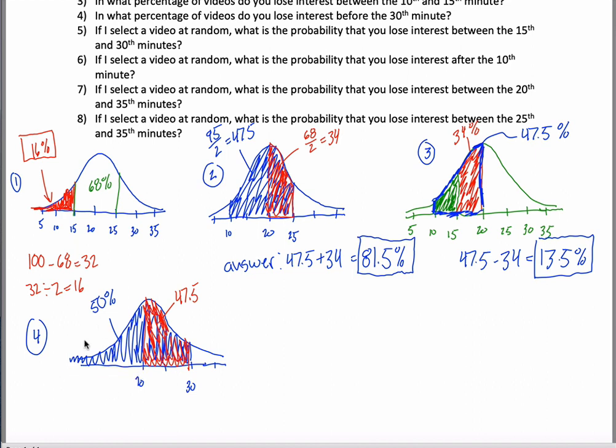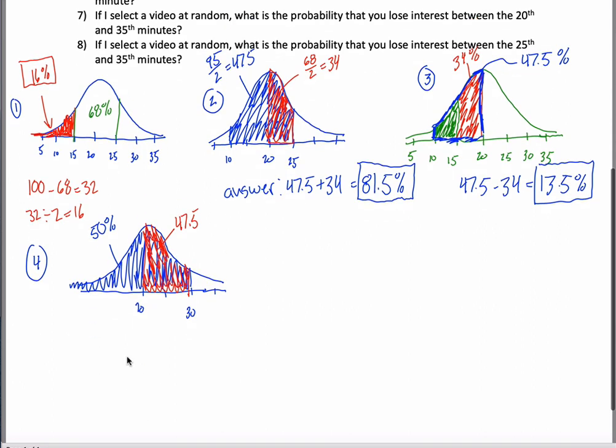We're shading in 50% here because we're not going from five to 20. We're going everything below 20 because the question asks, for number four, what percentage of videos do you lose interest before the 30th minute? So it's all this area. Anyways, add those two up and you get 97.5% which is the answer to this question.